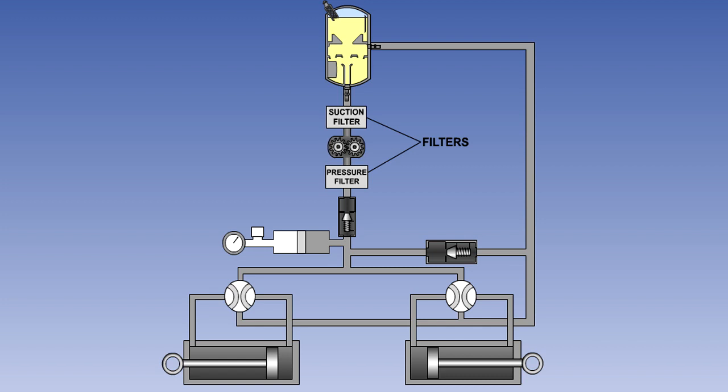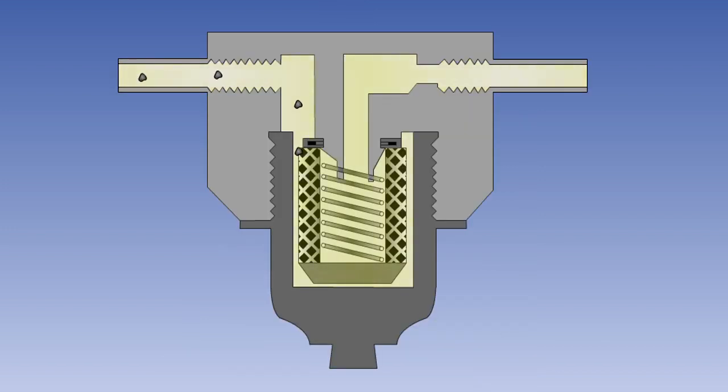The suction filter protects the pump, and the pressure filter ensures the cleanliness of the hydraulic fluid during use. There is also sometimes a filter fitted in the fluid return line to the reservoir, to remove particles picked up during component operation. Filters remove foreign particles from the fluid, thus protecting the seals and working surfaces of the components.